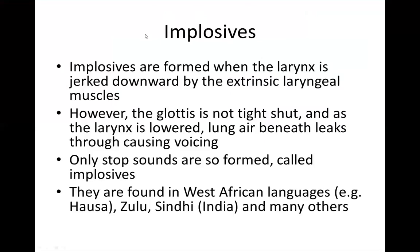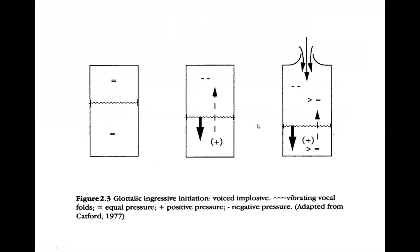The next sound is an implosive — produced as a glottalic ingressive, so it involves the larynx and the airflow is going in. Implosives are formed when the larynx is jerked downward, in contrast to ejectives where the larynx moves upward. We use those same extrinsic laryngeal muscles, but the downward movement is less natural than swallowing. It's harder to consciously move the larynx down unless you're used to producing this kind of speech sound.